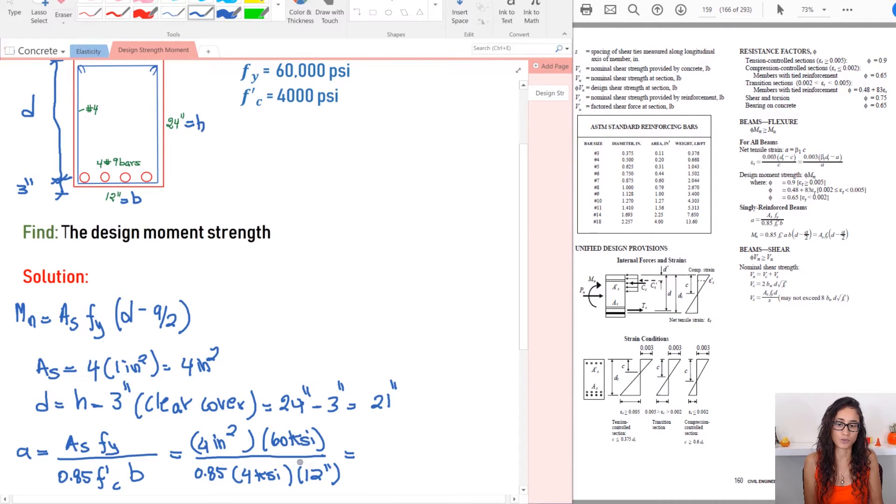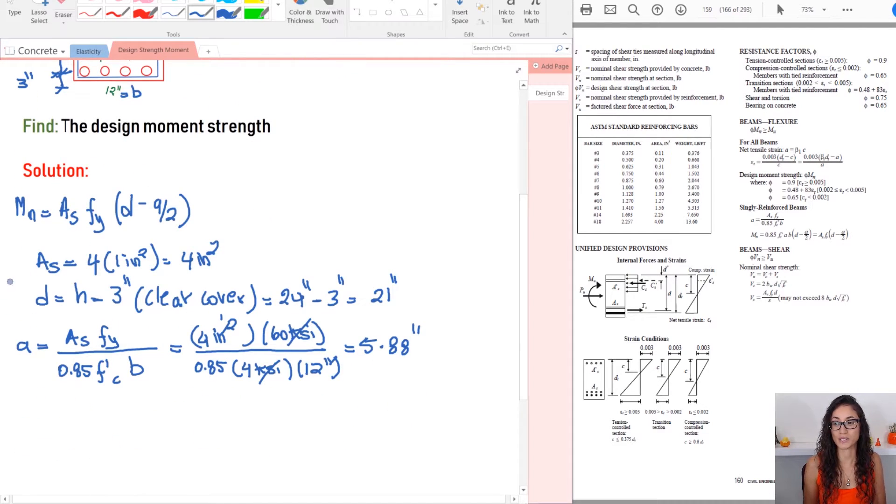So if usually, if you want to cancel the units, you're going to get KSI canceled with KSI. You got inch squared cancels with inch here. So you're going to be left out with inch and usually A is in inches. So you should get an answer in inches. So if you plug in these numbers in your calculator, you should get an answer of 5.88 inches. So that's your A. Okay.